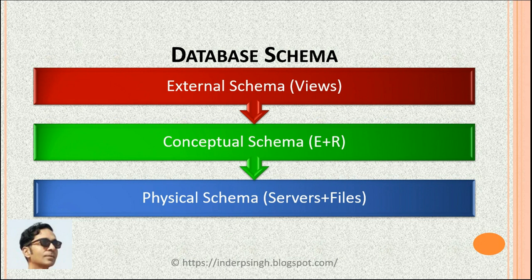In database design, the three types of schema are: conceptual schema, external schema, and physical schema. What I just showed you — the customers and orders tables — was an example of a conceptual schema. The conceptual schema gives the high-level structure of the data with entities and relationships.